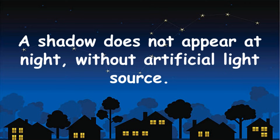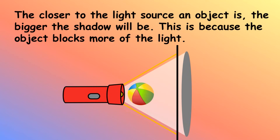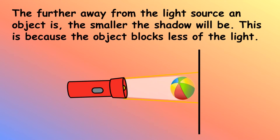Shadow does not appear at night without an artificial light source. From the above observations, we can divide the day into four different parts, which don't tell us the exact time — instead, they refer to an interval of time of the day. The closer an object is to the light source, the bigger the shadow will be, because the object blocks more of the light. The further away from the light source an object is, the smaller the shadow will be, because the object blocks less of the light.